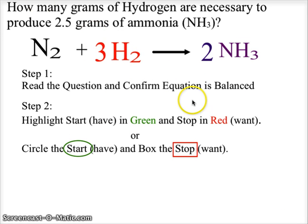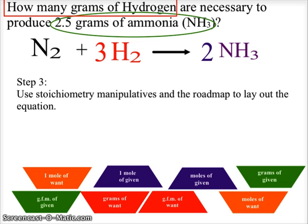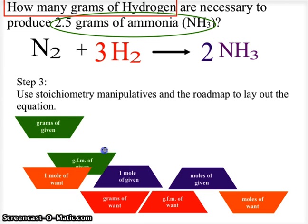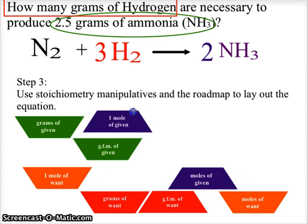Now let's look at a second question — the process of creating ammonia. The equation is: N₂ plus 3H₂ gives two molecules of ammonia. The question is: how many grams of hydrogen are necessary to produce 2.5 grams of ammonia? The starting point is grams of ammonia, which will be our grams of given. To get rid of grams of given we use the gram formula mass compared to one mole — so one mole of the given value.